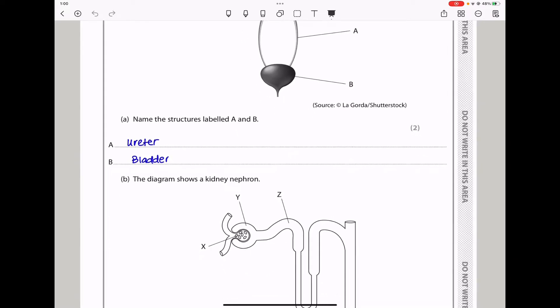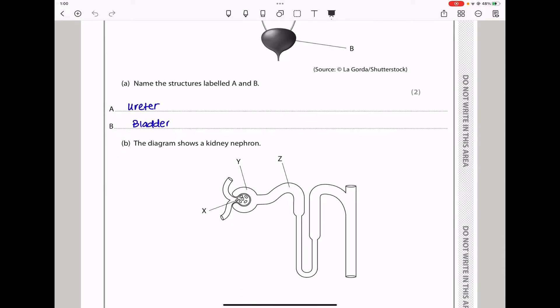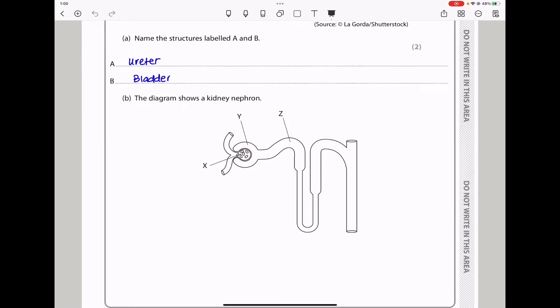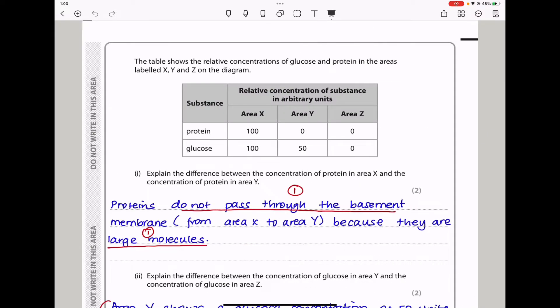The next part says the diagram shows a kidney nephron. Now on this kidney nephron, they've labeled region X, they've labeled region Y as well as region Z. The table shows the relative concentration of glucose and protein in the areas labeled X, Y, and Z on the diagram. We can see for proteins, in area X, the concentration is 100, while area Y and Z have concentration 0.